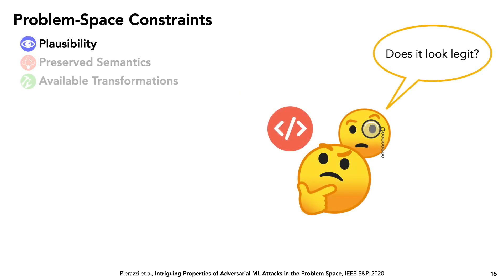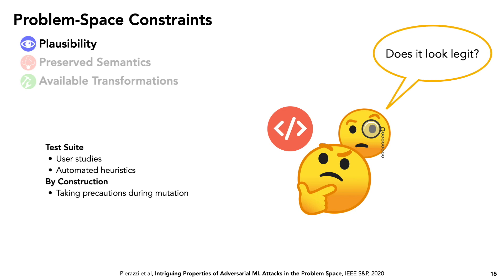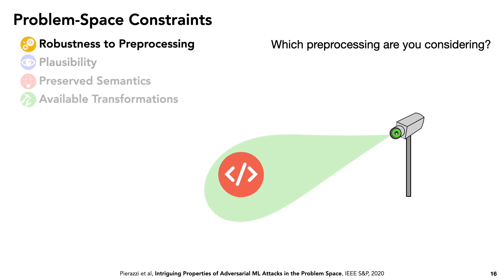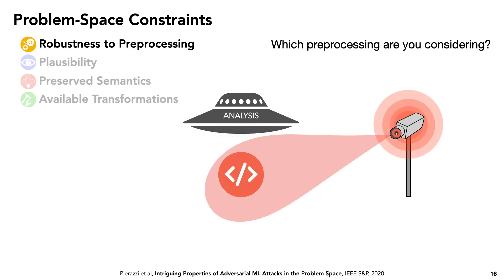Next, we define what it means to be considered plausible — the qualitative properties that must be preserved to ensure the object is realistic upon manual inspection. We define a test suite which might include user studies, or automated heuristics such as checking whether the app can even be installed or run. And something often overlooked: robustness to preprocessing. Many attacks, for example the silence attack, append bytes to malware causing misclassification. But in practice, program analysis approaches for removing unreachable code could strip out the features you need, completely defeating the attack. So it's necessary to define which preprocessing methods your approach is robust against.